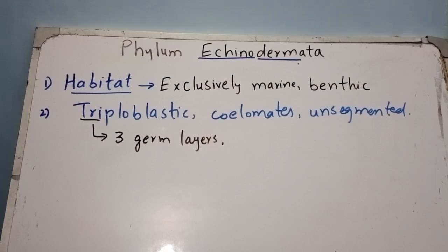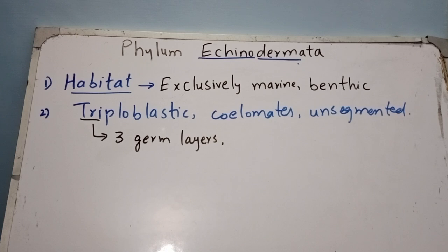Echinoderms are triploblastic — 'tri' means three — meaning their body is developed from three germ layers: outer ectoderm, middle mesoderm, and inner endoderm. They are true coelomates, having a true coelom, and their body is unsegmented — there are no segments or divisions in their body.